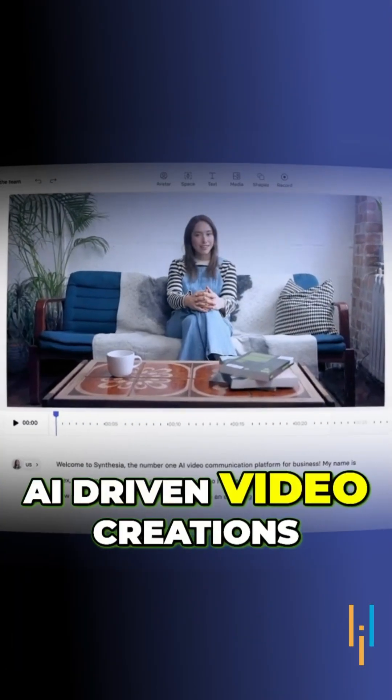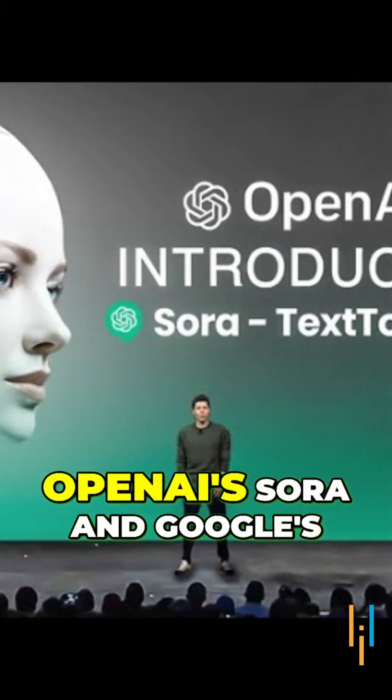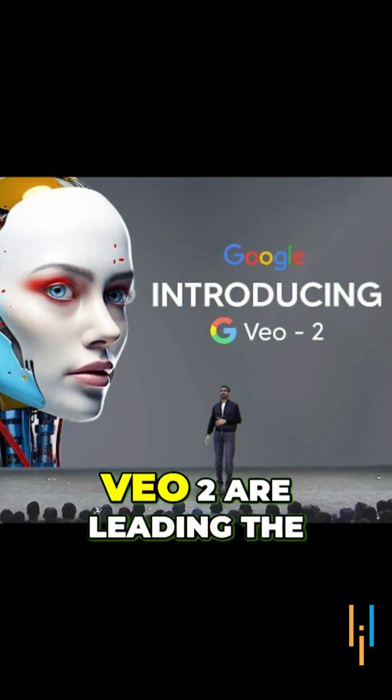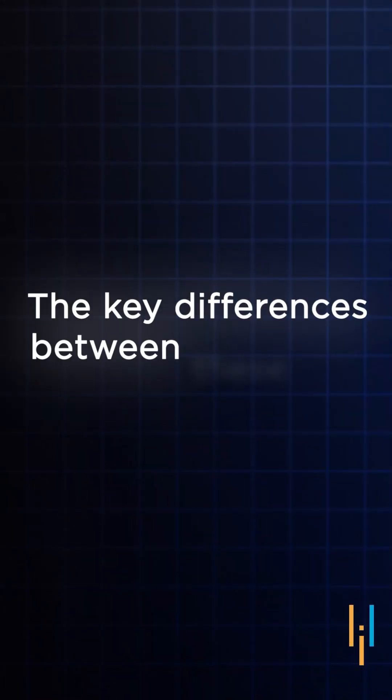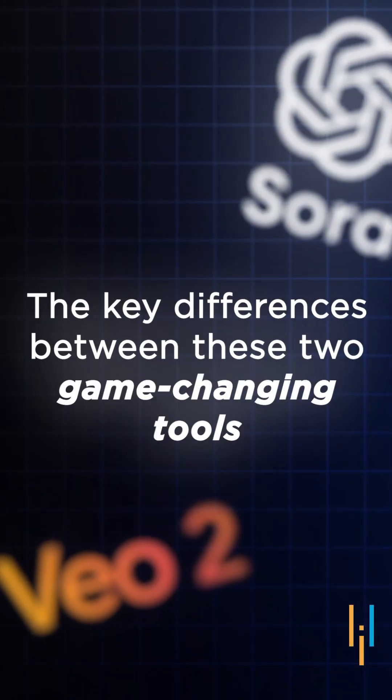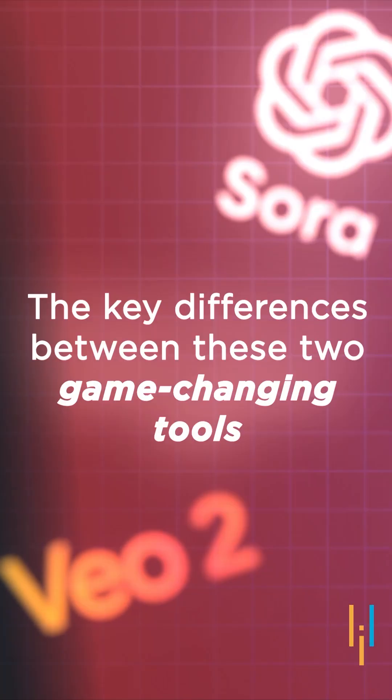In the world of AI-driven video creations, OpenAI's Sora and Google's VO2 are leading the charge. Let's break down the key differences between these two game-changing tools.